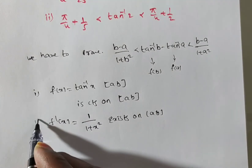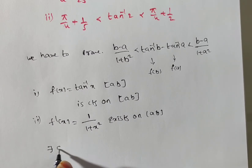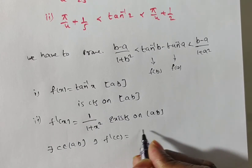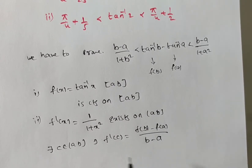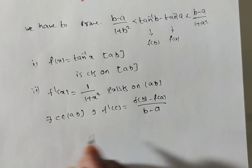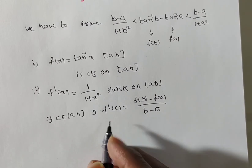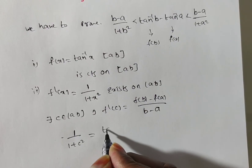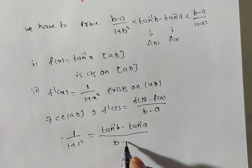We can apply Lagrange's mean value theorem (LMVT): the function is continuous and differentiable. By LMVT, there exists c belonging to the open interval (a, b) such that f'(c) equals f(b) minus f(a) by (b minus a). So f'(c) is 1 by (1 plus c square), which equals tan inverse b minus tan inverse a, all divided by (b minus a).